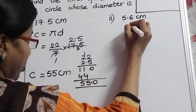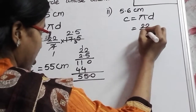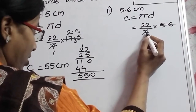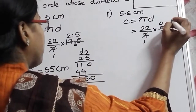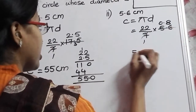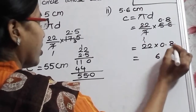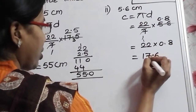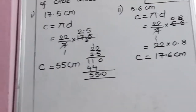Now the second bit: diameter is 5.6 centimeters. C = πD = (22/7) × 5.6. Cancelling: 7 goes into 5.6 — 7 × 8 = 56, so we get 0.8. Then 22 × 0.8: 8 × 2 = 16, 8 × 2 = 16, 16 + 1 = 17. After one decimal digit, place the point. The circumference is 17.6 centimeters.